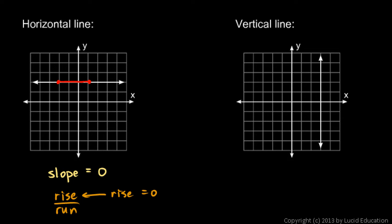Now a vertical line is different. Let's imagine picking two points on the vertical line. It doesn't matter which two points you pick. If you try to do rise divided by run, in this case the run, the horizontal change, is zero.